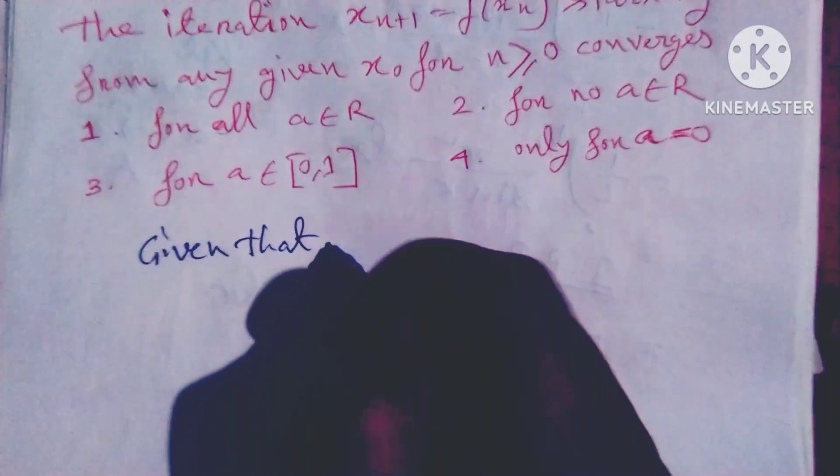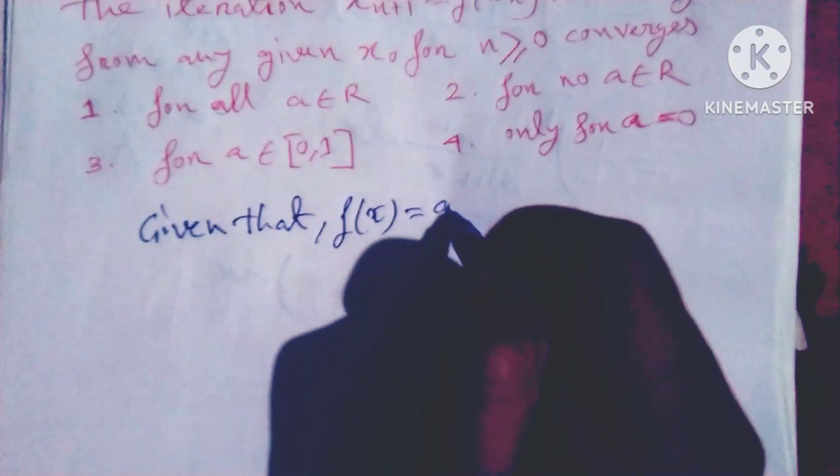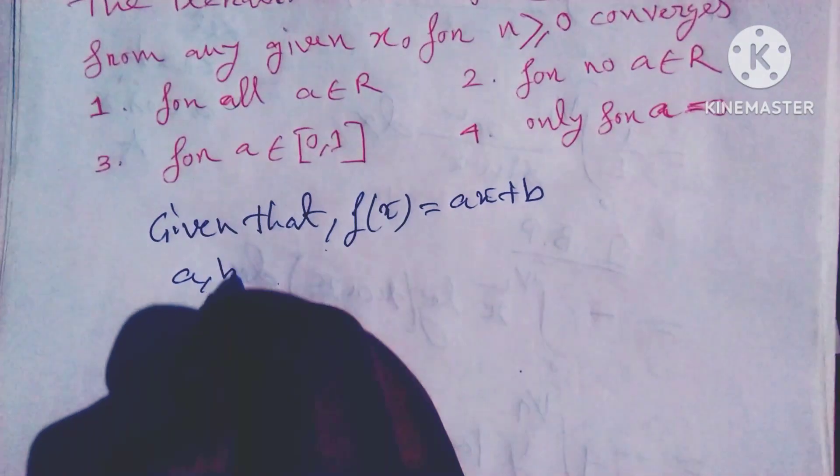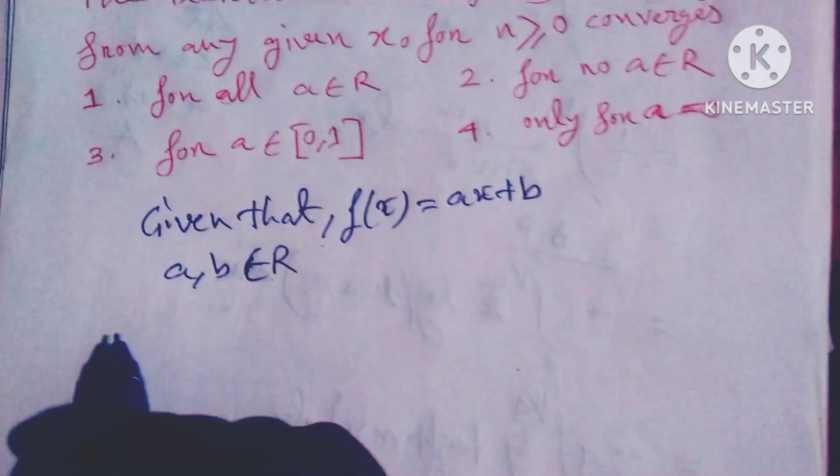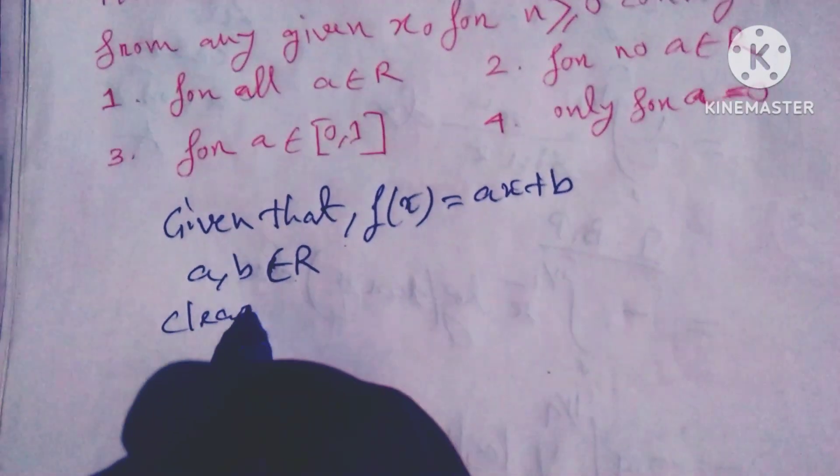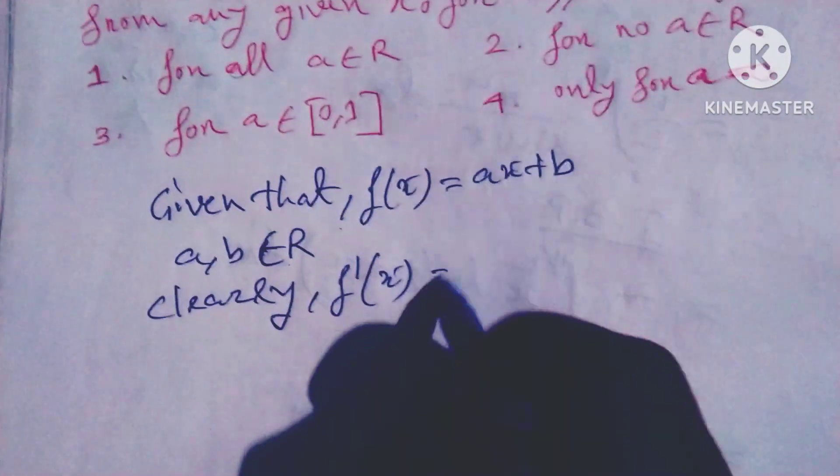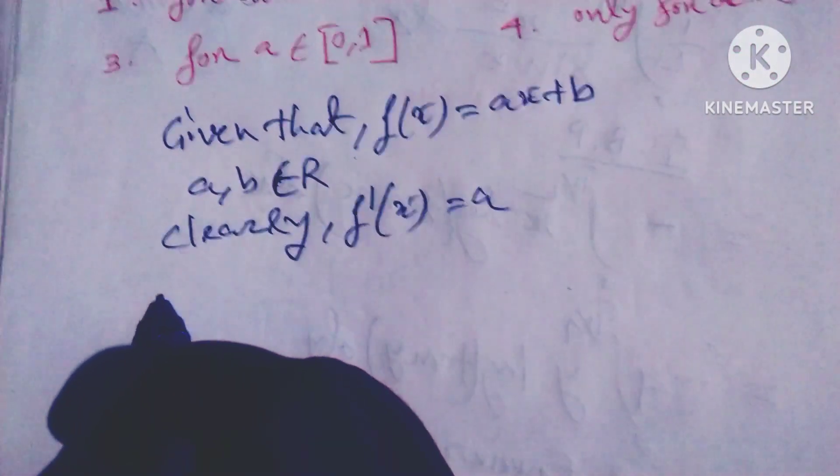Given that f(x) = ax + b where a, b belongs to R. Clearly, f'(x) = a. So the iteration method...